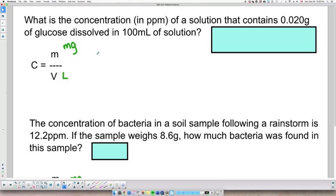So if, as usual, I list my info, I will have the mass of the solute, which is the glucose, right? So it's 0.020 grams. Now, I said that this mass has to be expressed in milligrams. So if we do times 1,000, we will obtain 20 milligrams. Next, we have the volume of the solution, which is 100 mL.